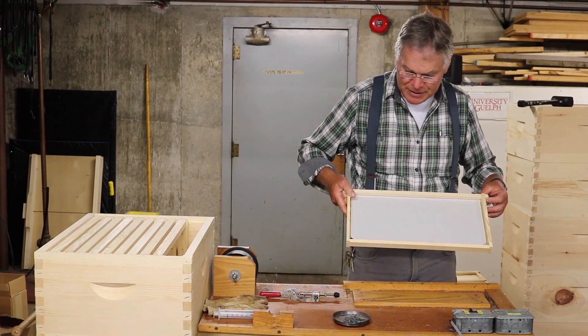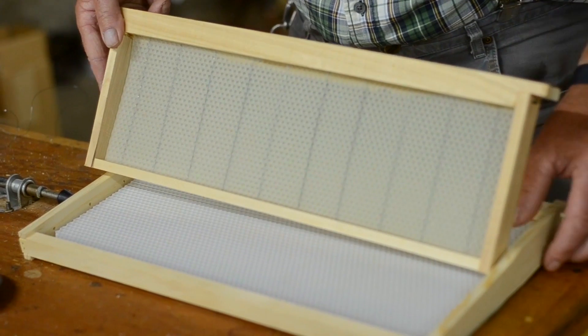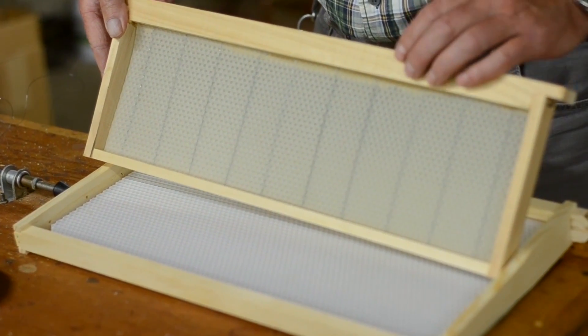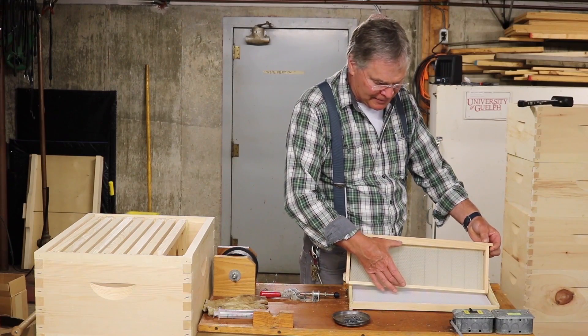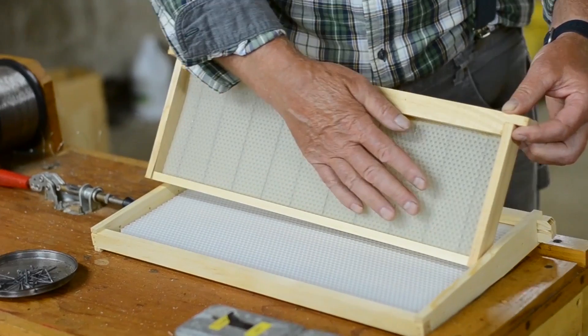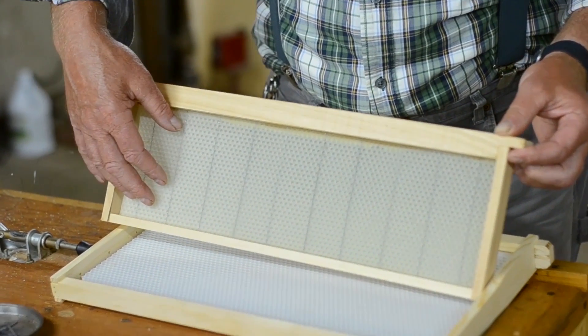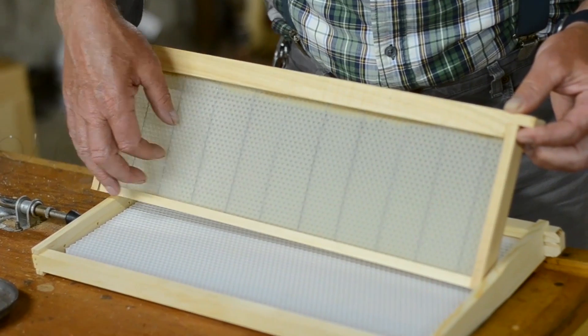Let's talk about assembling frames with beeswax now. If we have frames that are a medium depth, the span from top bar to bottom bar isn't very big and so we can use sheets of beeswax without any cross wires.